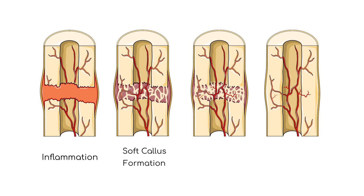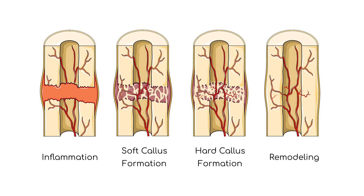Soft callus formation: a fibrous tissue matrix and cartilage form a soft callus. Hard callus formation: the soft callus is gradually replaced by a hard callus made up of immature bone tissue. Remodeling: over time, the body remodels the newly formed bone tissue to create a stronger, more dense bone structure. This process can continue for several months to years.